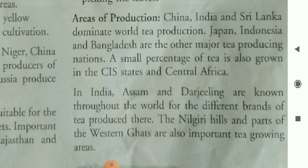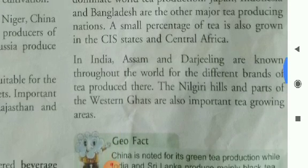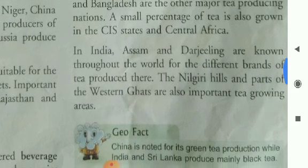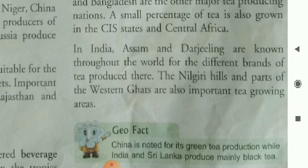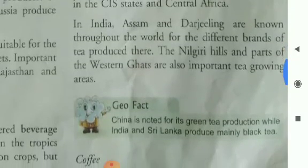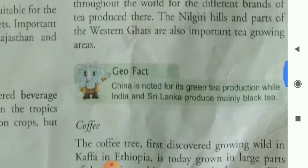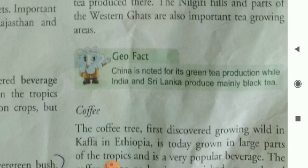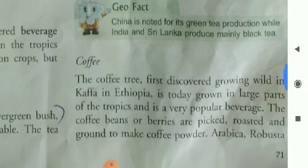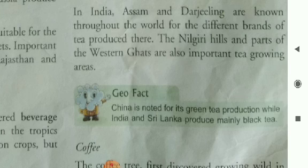Areas of production: China, India and Sri Lanka dominate world tea production. Japan, Indonesia and Bangladesh are other major tea producing nations. A small percentage of teas are also grown in the CIS states. In India, Assam and Darjeeling are known throughout the world for their brands of tea. The Nilgiri Hills and parts of the Western Ghats are also important tea growing areas.